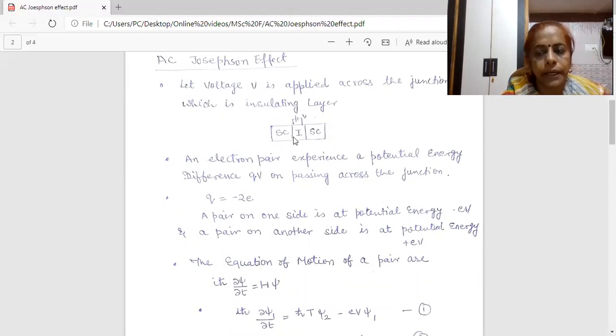Now, since in a superconductor, we always consider an electron pair. That means a cooper pair. So, when tunneling takes place from one junction to another junction, an electron pair will experience a potential energy difference, QV, on passing through the junction.